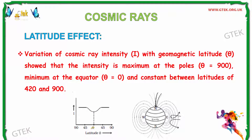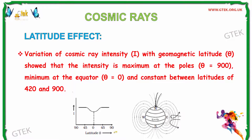At the equator region theta is equal to 0°, and here the cosmic ray intensity is minimum. Similarly, when theta is 90° it is maximum, and it is constant when theta is between 42° and 90°.